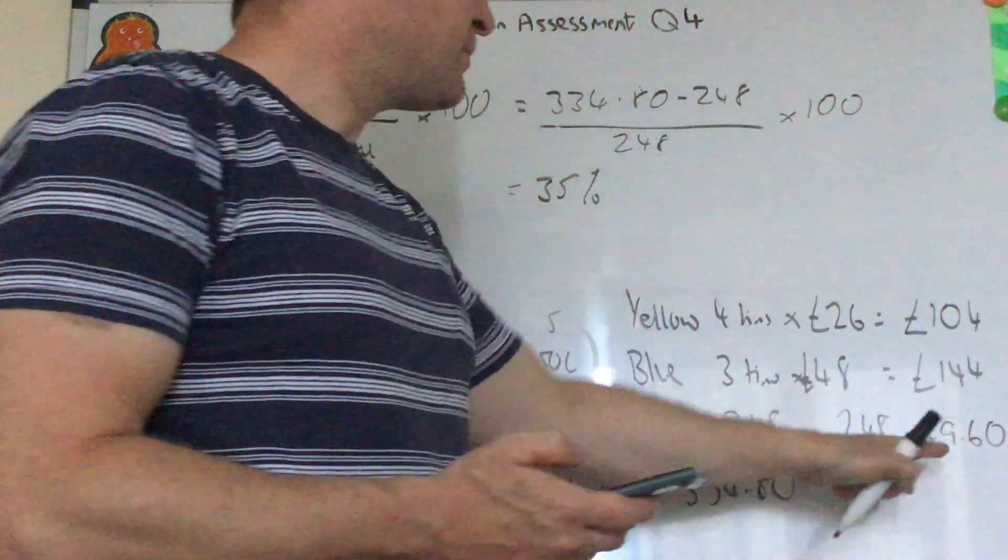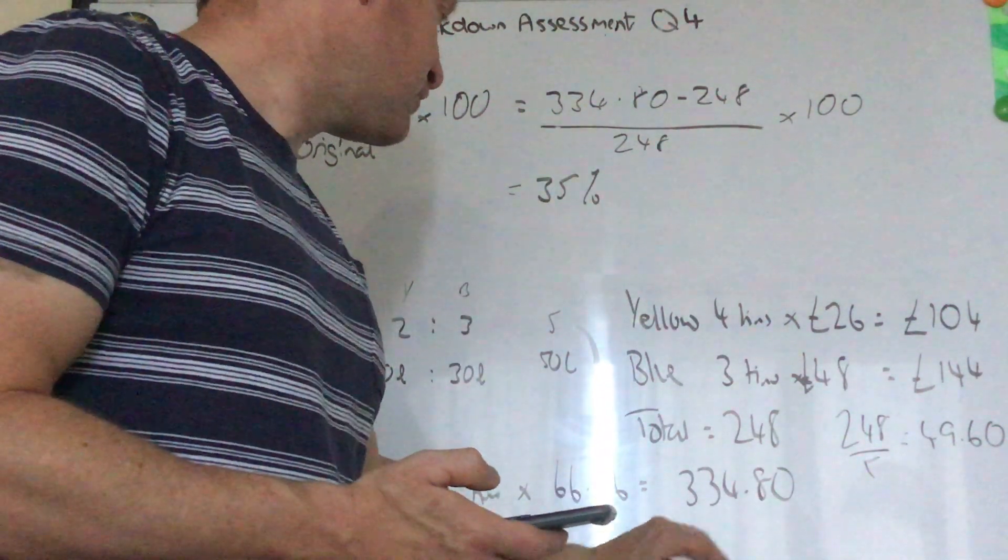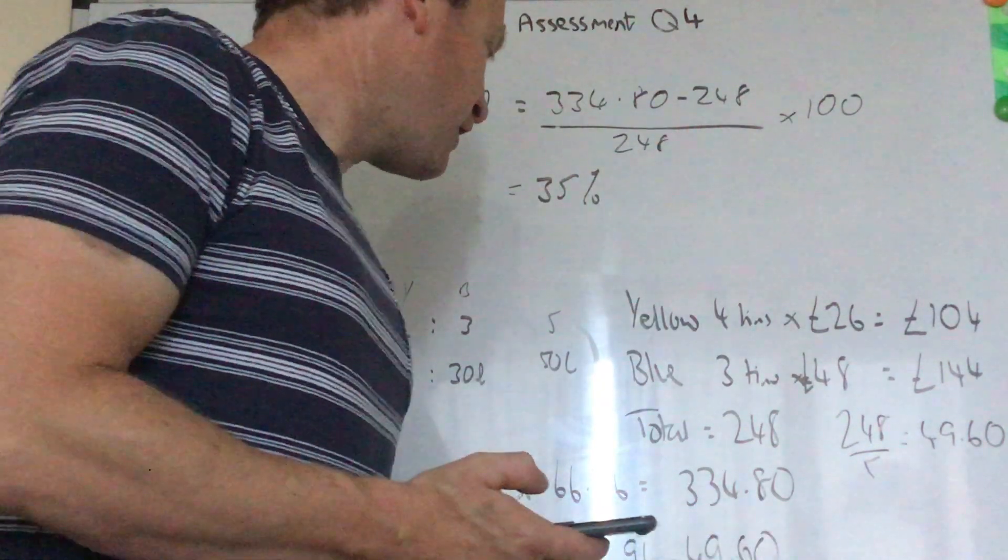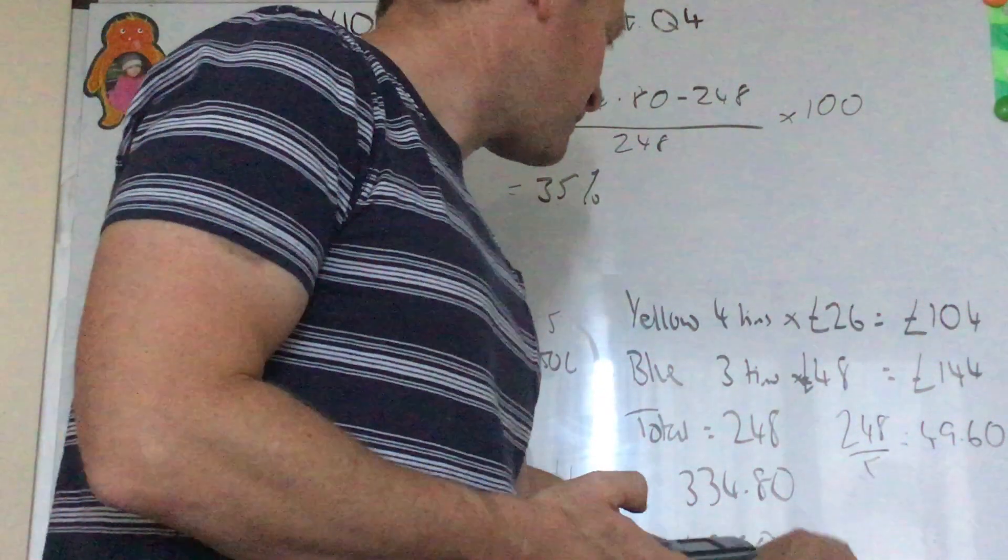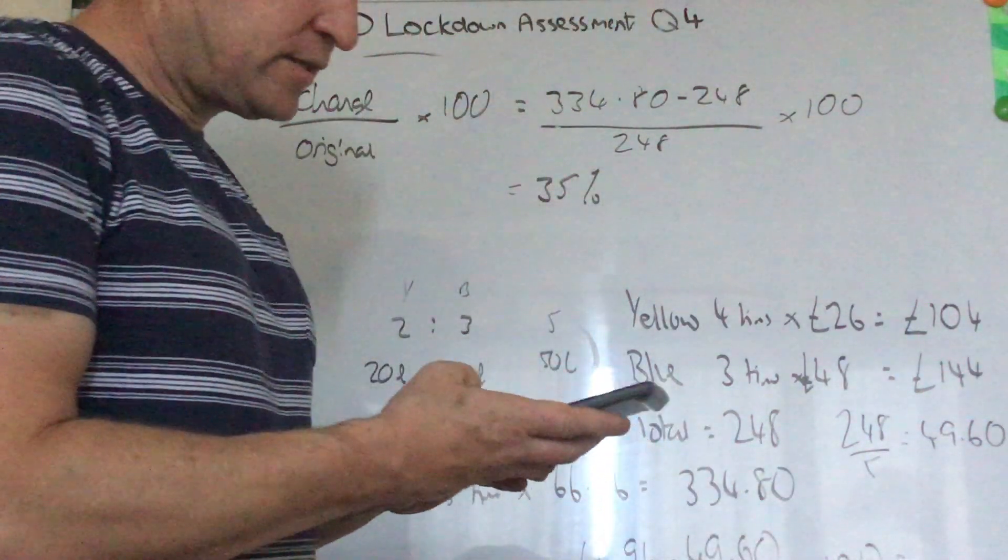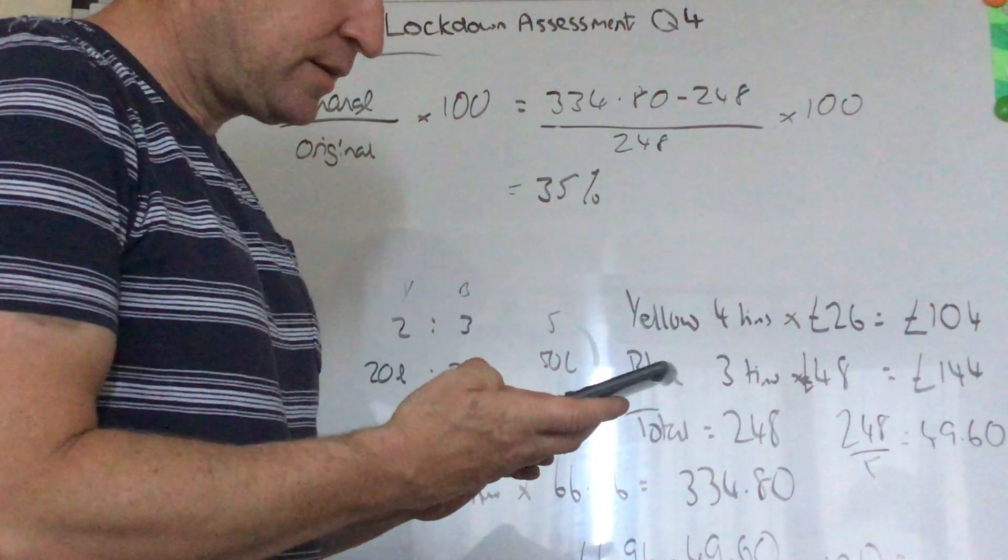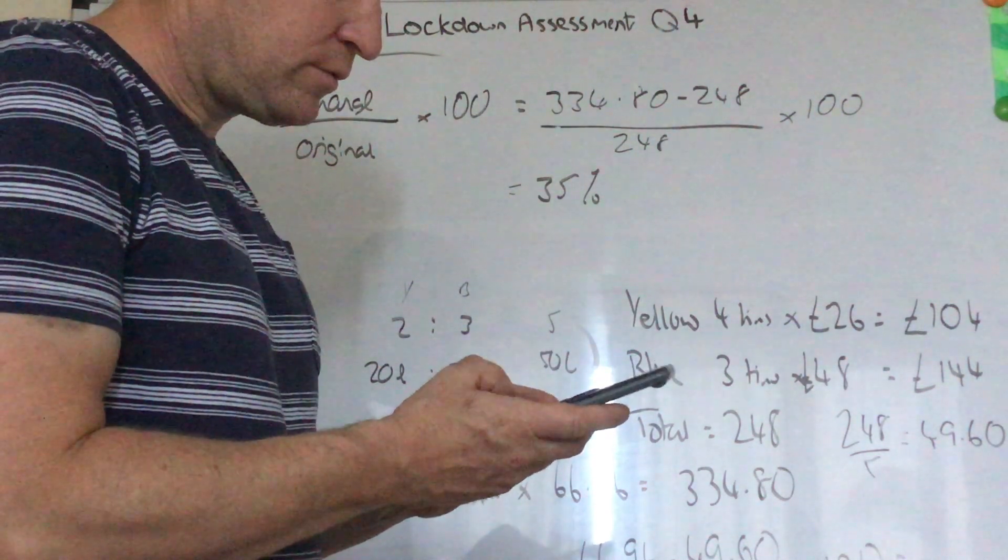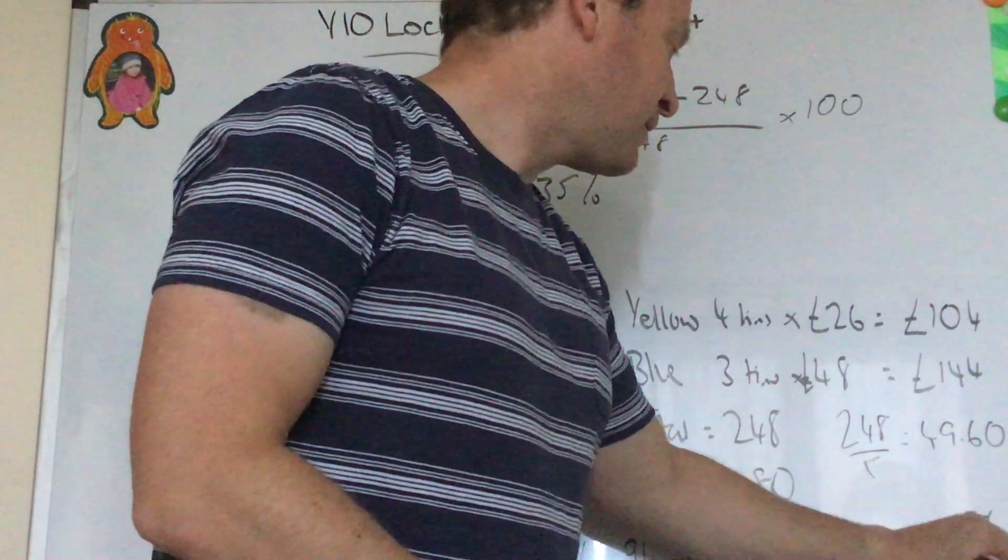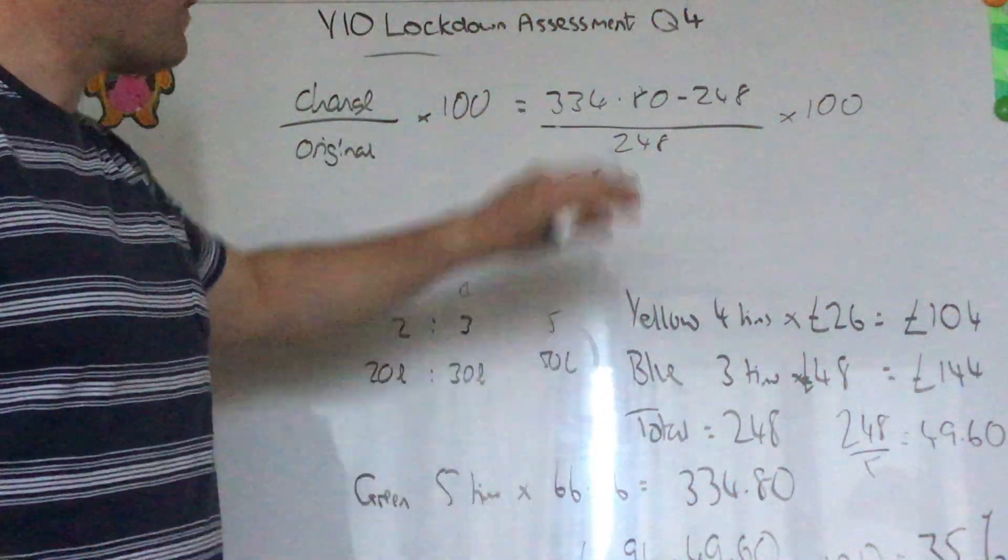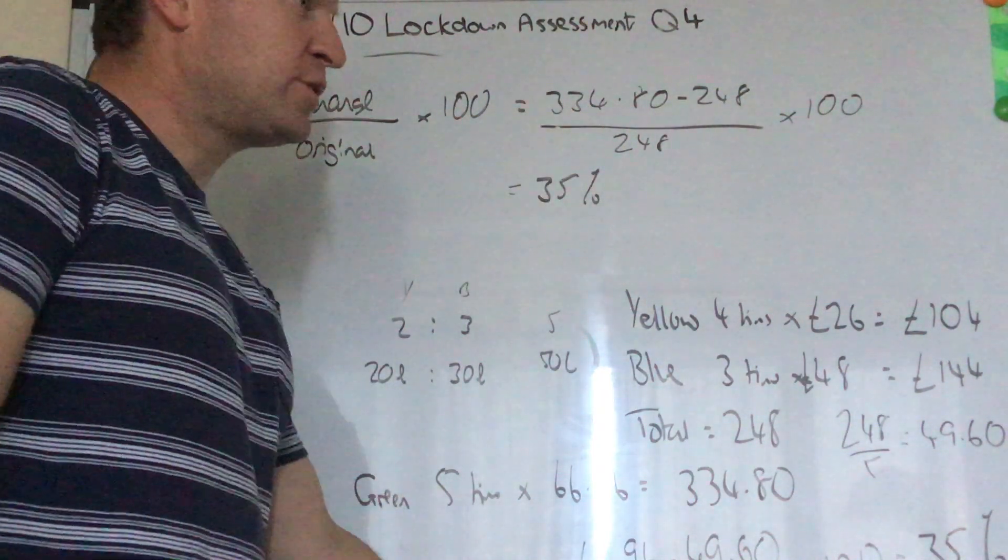And then if we've done £66.96 minus £49.60 over £49.60 to get a profit per tin times by 100. £66.96 minus £49.60... we still get 35%. So it doesn't matter which of the two you did. I think that was more straightforward but you could have gone down this method. Alright that's question four.